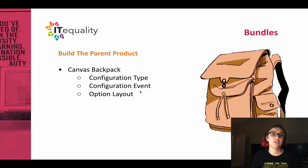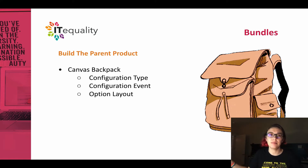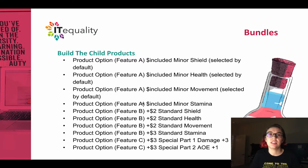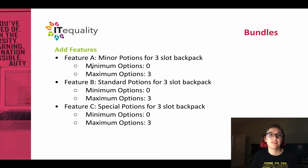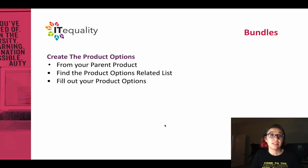The configuration event controls whether you want this to be something where you edit and go back to change it, or whether it's required that you configure it before moving to the next step. Then we'll talk about the option layout — there are a few different UI settings available. We'll build the child products and associate them with different features: Feature A for minor potions where you can choose three of the same kind, Feature B for potions with additional pricing, and Feature C for special potions limited to one.